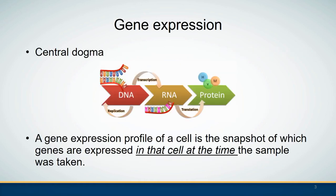First let's have a quick recap of what gene expression is. This figure shows the central dogma — how genetic information flows from DNA to protein. Gene expression happens when DNA is transcribed into RNA, and a gene expression profile is a snapshot of which genes are expressed in that cell at the time when the sample was taken.